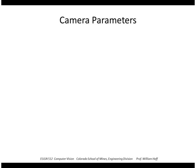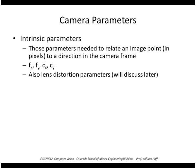We can divide camera parameters into two types. The first set is intrinsic parameters — these are internal to the camera and we use them to relate an image point in pixels on the image buffer to a direction or ray in the camera's coordinate system. We've looked at the following intrinsic parameters: the focal length expressed in pixels, and the center of the image in the image buffer.